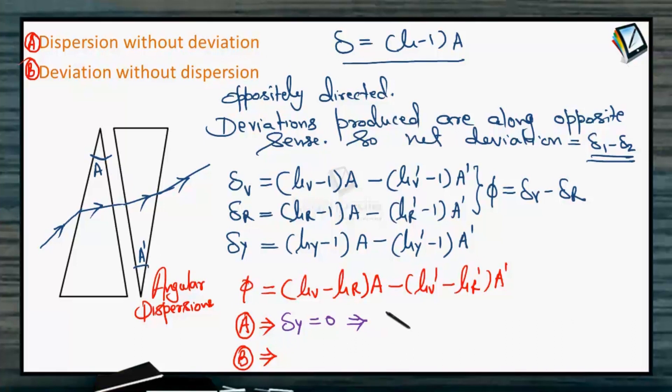δ_yellow is 0 means (μ_yellow - 1)A = (μ_yellow' - 1)A'. Then this will serve as an equation to find some unknown if there is any in a numerical problem.